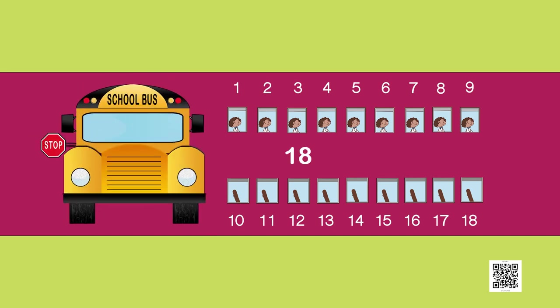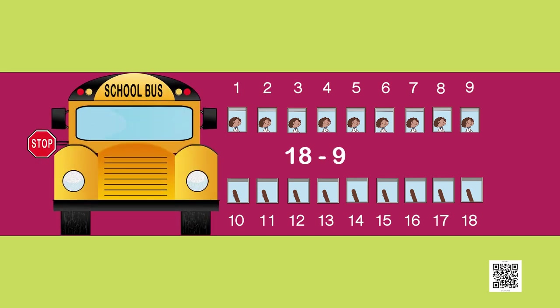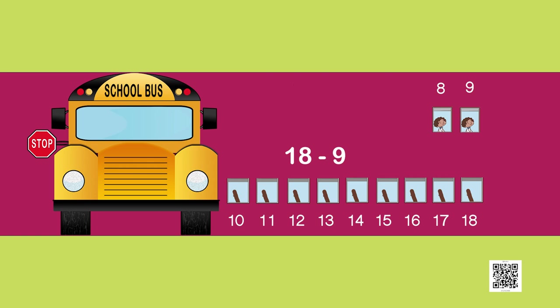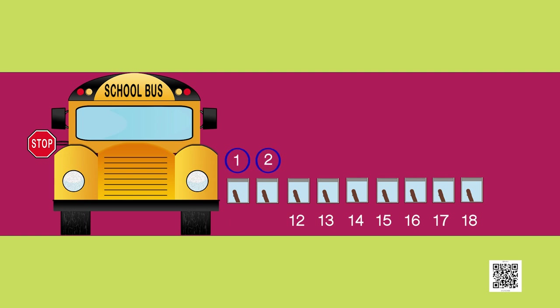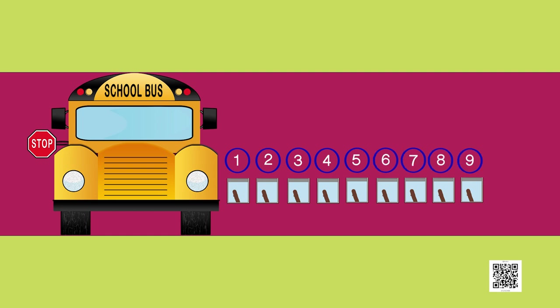That means we need to count the seats that are still empty. So we do 18 minus 9. If we remove these 9 seats from the 18, we are left with — let us count it together: 1, 2, 3, 4, 5, 6, 7, 8, 9. Great! That means 9 seats are still empty, so 9 more children can sit inside this bus.